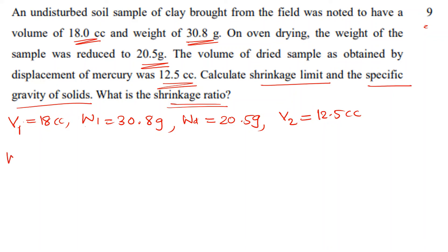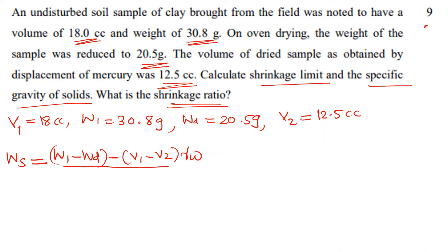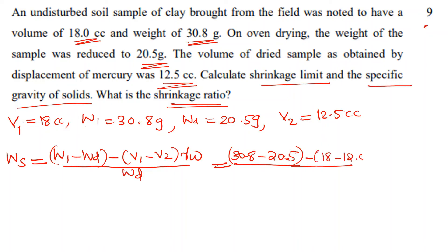To solve the shrinkage limit, we substitute into the equation: SL = W1 minus dry weight minus (initial volume − final volume) × γw, divided by weight of solids. Substituting: (30.8 − 20.5) for the weight difference, then applying the volume and γw values.